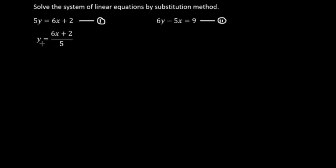Step number 1: from equation 1, express y as (6x plus 2) divided by 5 — this is equation 3. Step number 2: substitute this y value into equation 2. So we replace y with (6x plus 2) divided by 5 in equation 2.